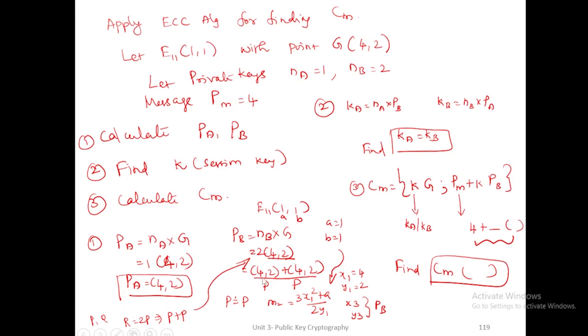Here x1 is 4, y1 is 2. How can we find the a value? It is an elliptic curve. The generalized format is Ep(a,b). By applying that, the a value will be taken as 1. You substitute these values here: x1 is 4, y1 is 2, a is 1.